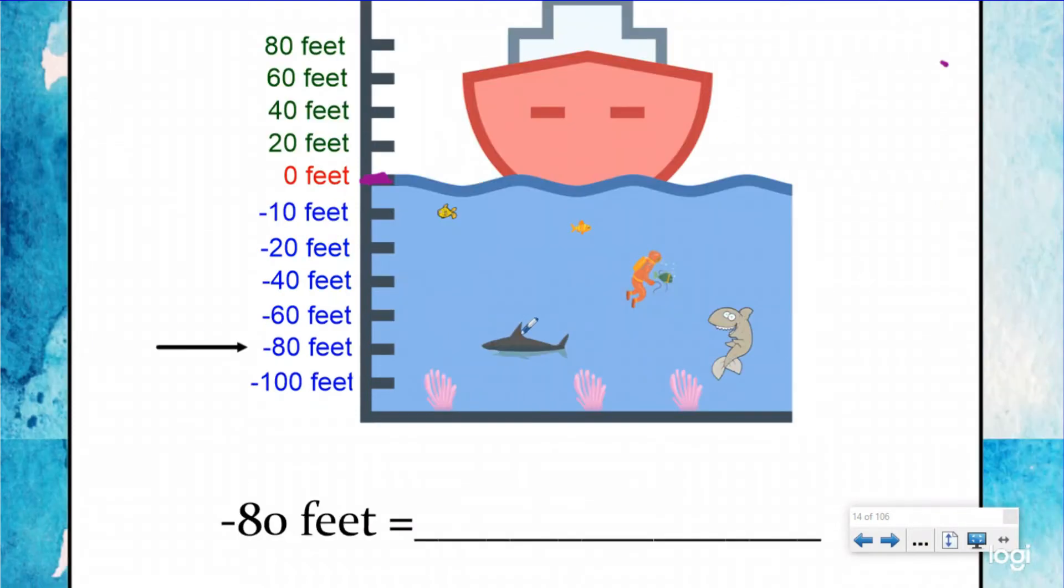So if you look right here at the shark, it's at negative 80 feet. So if you're talking about elevation, you could say negative 80, or you could say 80 feet below sea level. There's two different ways to say negative when you're talking about elevation. If you wanted to say positive 80, you could just say that the ship was 80 feet tall, or you could say it was 80 feet above sea level. So when you're talking about elevation, zero is represented by sea level.